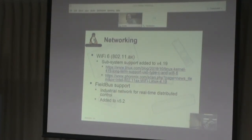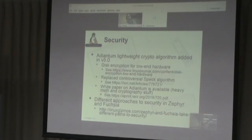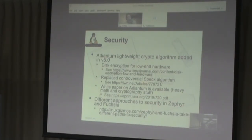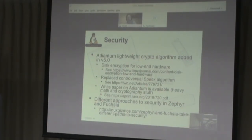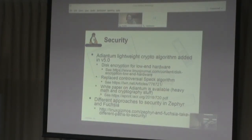In terms of security, the Adiantum lightweight crypto algorithm was added in 5.0. This is storage encryption for low-end hardware — essentially designed for budget cell phones, so that people running a $50 phone can still have their data encrypted, running on a processor without hardware crypto acceleration. It's a pure software crypto algorithm. There's a white paper if you want to read it — it's heavy on the math, but it replaced a very controversial algorithm in the kernel called the Speck algorithm.